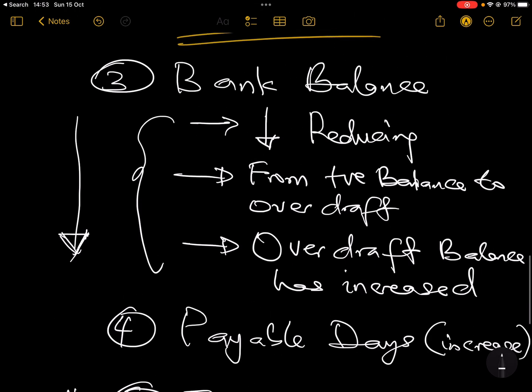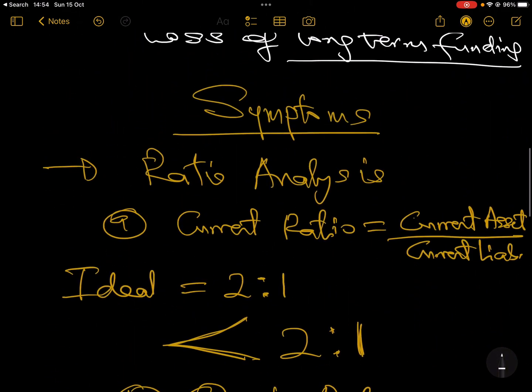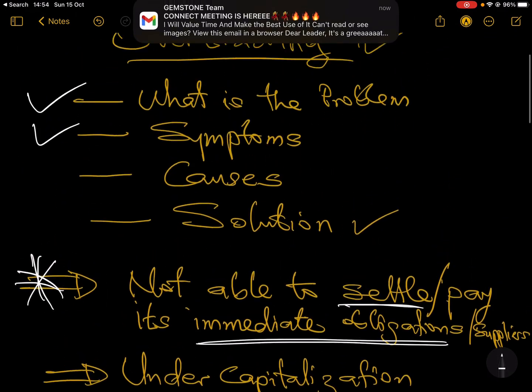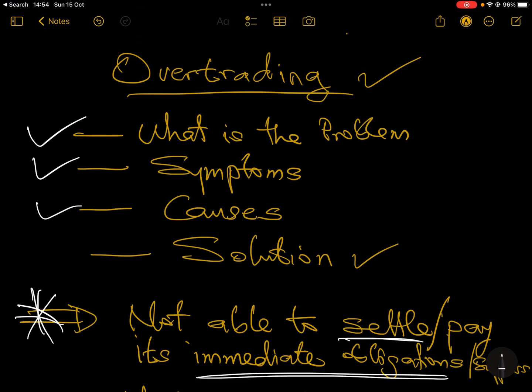So when you see this, you need to quickly check one or two other ratios to conclude. One in isolation might not give you that conclusion, but when you're able to see two or three of these symptoms in a particular company, then it's really a bad signal. And that is how you will know that a company is over trading. So we've talked about what is over trading. We said you don't have enough money to pay your immediate obligations - that is over trading. You don't have enough long-term funding to take care of your business - that is over trading.